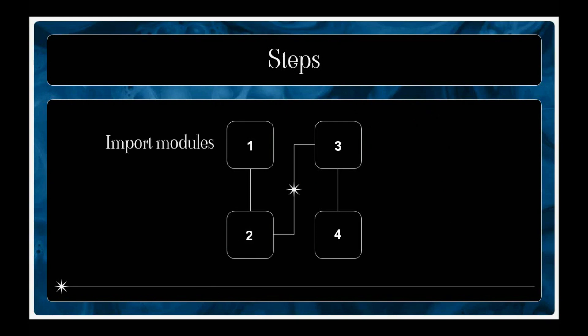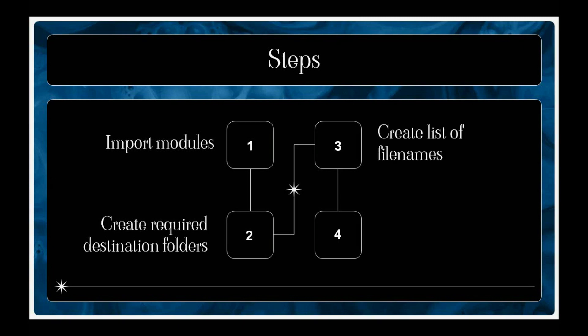I am going to outline four steps to perform this splitting using Python. The first step is to import the modules — we need two modules: the OS module and the shutil module. After importing the modules, we need to create the destination folders: one for the training dataset, one for the validation dataset, and one for the test dataset. After creating the folders, we need to create a list of file names and then copy the image files from the original dataset to the destination folders.